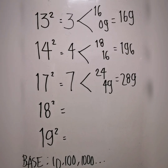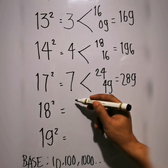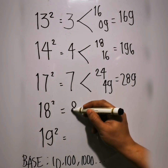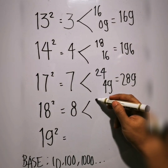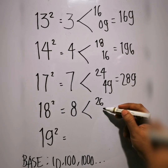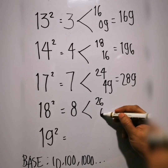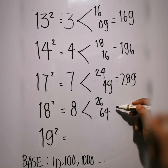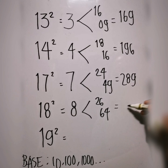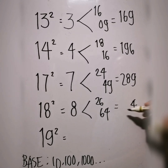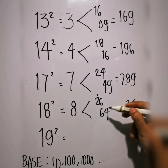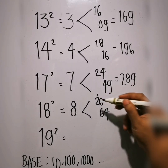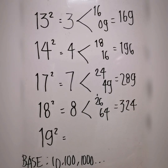Next example, 18 squared. 18 minus 10 is 8. 18 plus 8 is 26. 8 squared is 64. So we have 4, then 6 plus 6 is 12 — carry the 1, making it 2 plus 1 is 3. The answer is 324.